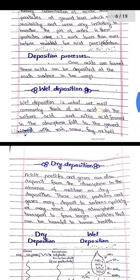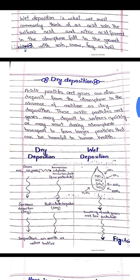In dry deposition, acidic particles and gases can also deposit from the atmosphere in the absence of moisture. These acidic particles and gases may deposit to surfaces quickly or may react during atmospheric transport to form larger particles that can be harmful to human health. The diagram shows the clear difference between wet deposition and dry deposition.